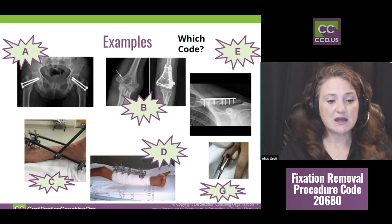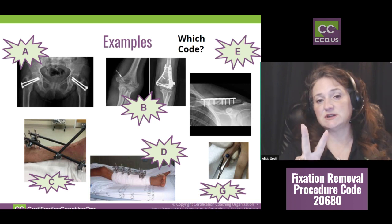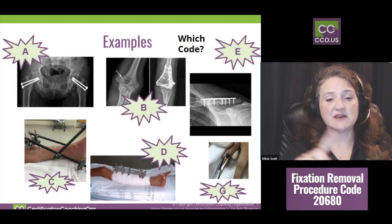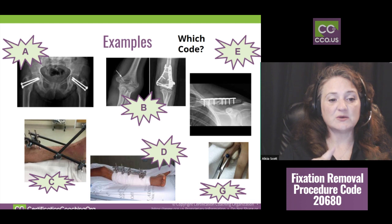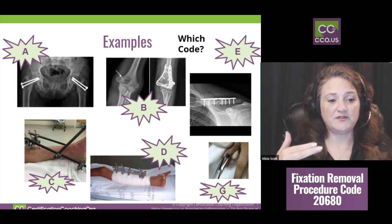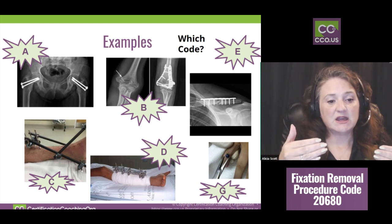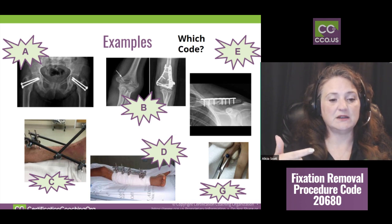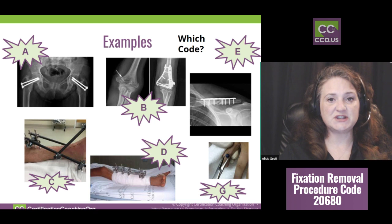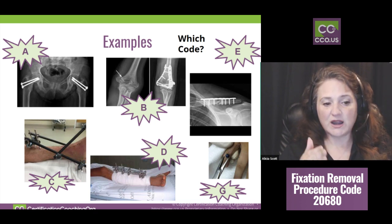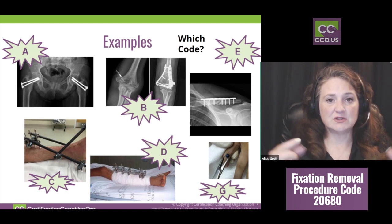Now let's look at examples. We have two codes: the one ending in 70 and the one ending in 80. Example A: screws put into the two sides of the femur — going into the top of the femur and into the hip joint. Which code would you use? We have two areas, the femur, with multiple screws, and we're going to remove them.